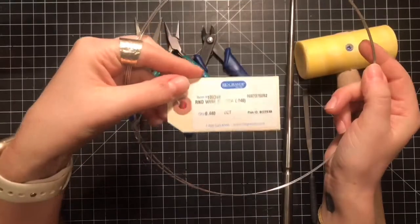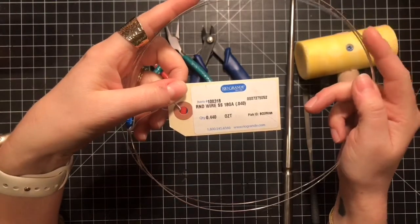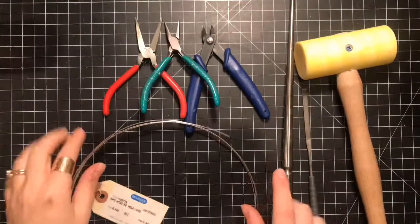The wire I'm using today is 18 gauge sterling silver, it might be half hard from Rio Grande. This is what we're gonna use to make our earring.